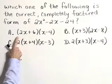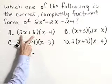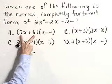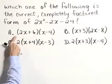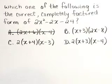Now, right off the bat, we can eliminate answer choice A because it's not in completely factored form. We see a value of 2, a value of 6. There's a common factor of 2 that can be pulled out of there. So let's eliminate A as a possible choice.